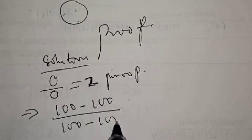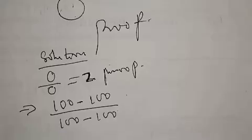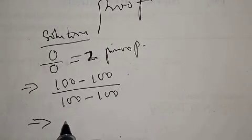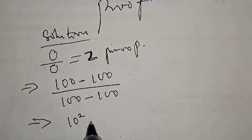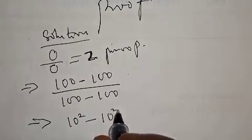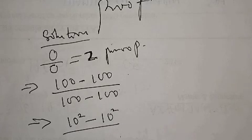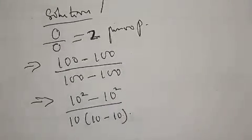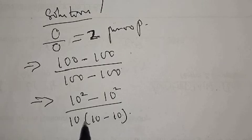This can be expressed as 10 squared minus 10 squared over 10 into 10 minus 10. Our numerator is 10 squared minus 10 squared and our denominator has been expressed as 10 into what? 10 minus 10.